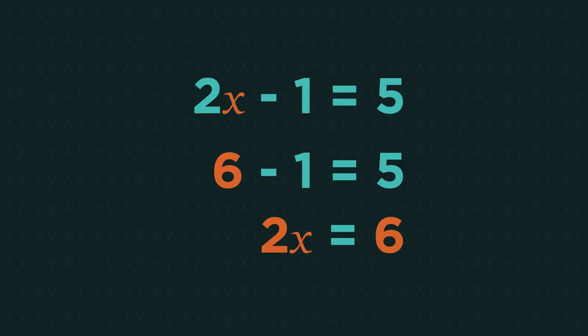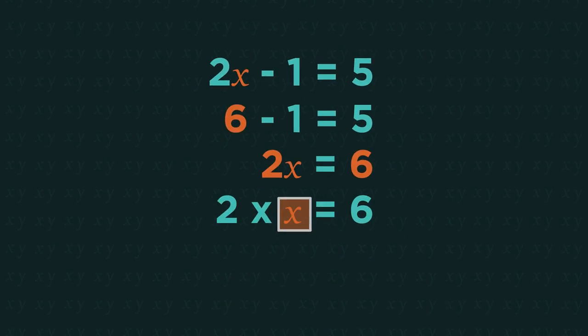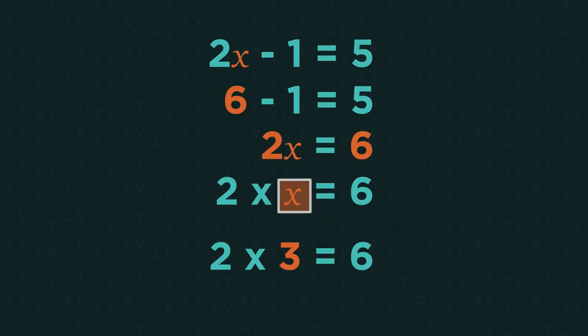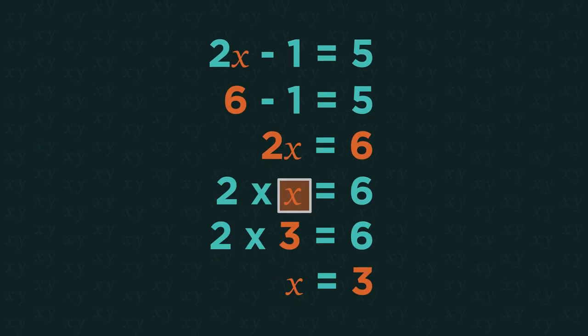We can then solve this second bit also just by working it out. Something times two equals six. It must be three. X equals three.